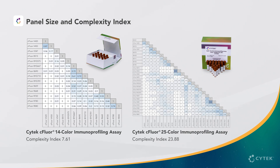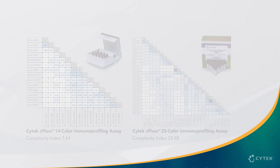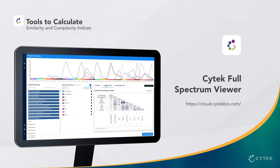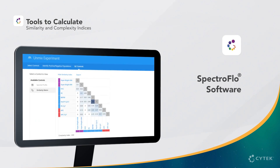Both are acceptable for their respective panel sizes and yield good data since panel design best practices were used. The similarity matrix and complexity indices can be obtained from the Cytec full-spectrum viewer on our website using our library of fluorochrome signatures. You can also view the similarity and complexity for your own sample data when using the unmixing wizard in the SpectroFlow software.